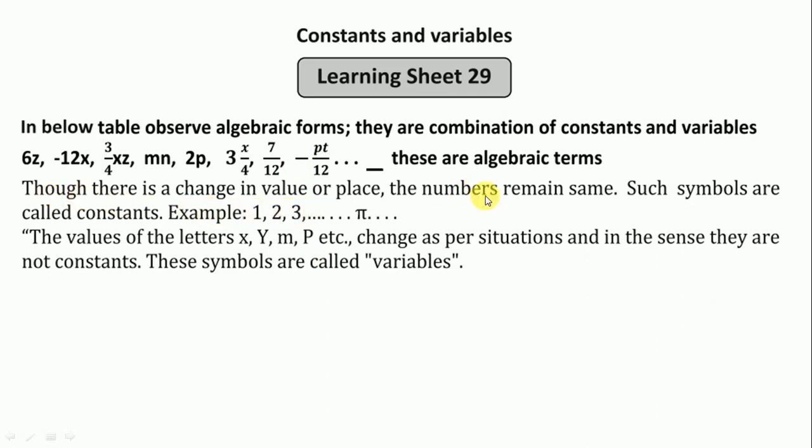Such symbols are called constants, for example 1, 2, 3, and pi. The value of letters x, y, m, p, etc., change as per situation and in the sense they are not constant. These symbols are called variables.